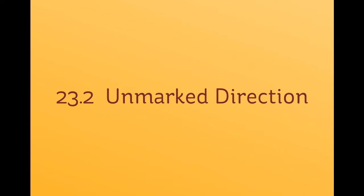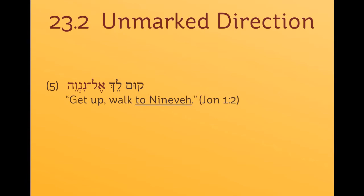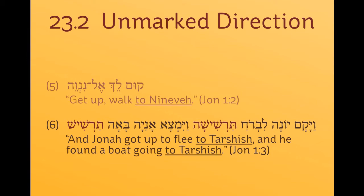Alright, we're on our last point for today: unmarked direction. If you want to indicate direction towards some place, Hebrew has at least two ways of doing it. The most common is using the preposition el. Here's an example — God speaking to Jonah: qum, lech el Ninveh — arise, walk to Nineveh. The other way is that you can have a qamets-he ending on a singular noun. It can only attach to singular nouns. When it does so, it also indicates direction toward. V'yakom Yonah livroach Tarshisha — and Jonah got up to flee to Tarshish. The noun is Tarshish; the qamets-he indicates direction towards Tarshish.